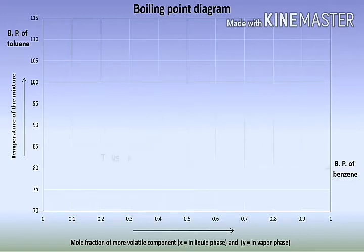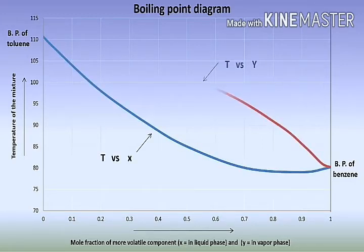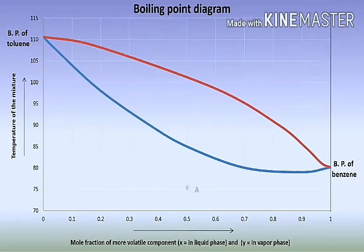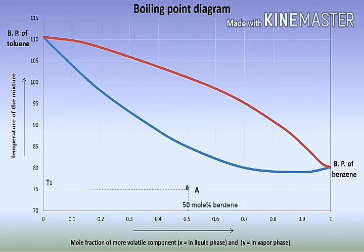The intersection of the double surface with constant pressure produces a looped curve without maxima or minima, extending from the boiling point of pure benzene to that of pure toluene. Suppose the mixture represented by point A contains 50 mol% of benzene and is at a temperature of T1 degrees Celsius.